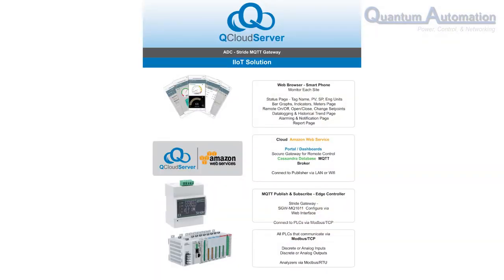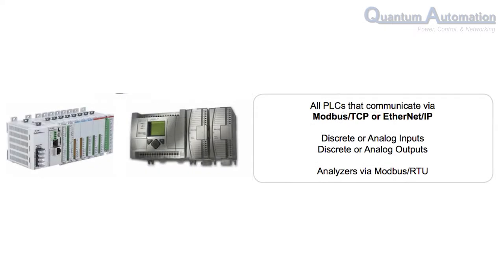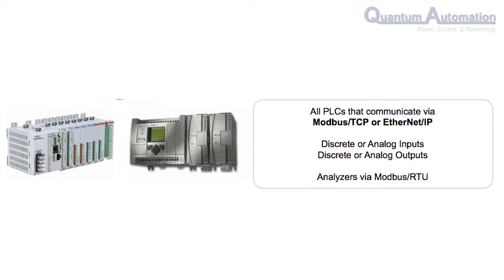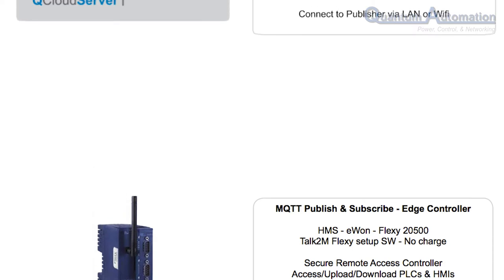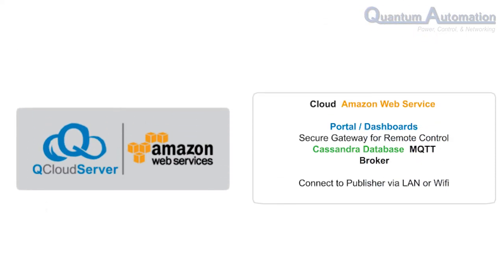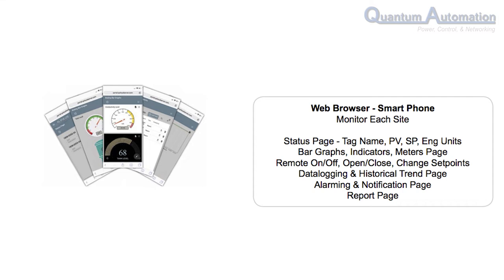So just how do we do this? As we look at this IIoT data sheet with a Flexi Edge controller, let's start at the bottom where the sensors come into the PLC and note the protocols that we accept. We then introduce an Edge controller, which is an MQTT gateway to publish and subscribe information to and from an MQTT broker server in Amazon Web Services or Azure. The MQTT broker sends the data to another server called the Portal to generate dashboards, and to the Cassandra database server for logging purposes. The dashboard looks and feels like an HMI, consisting of a status page, an indicator page, a control page, a trend page, an alarm page, and a report page.